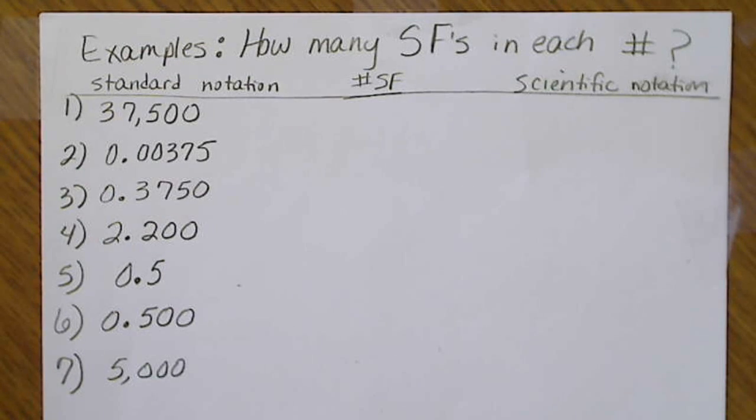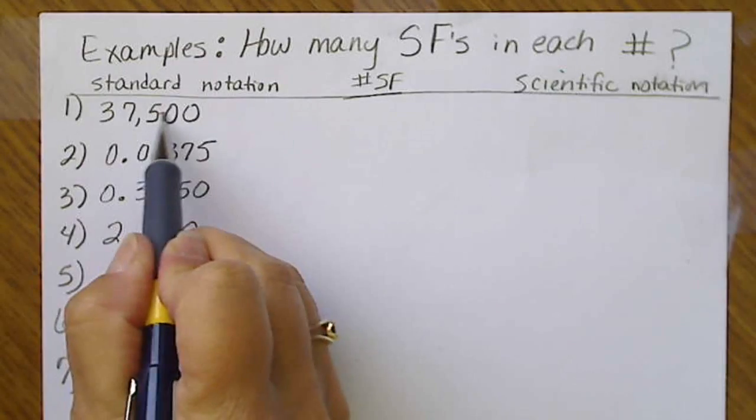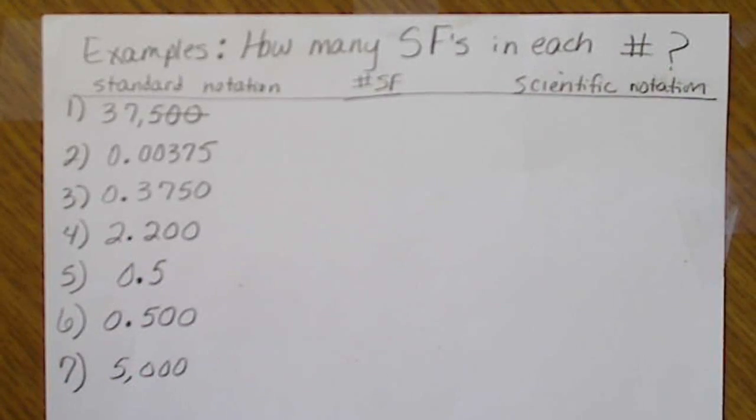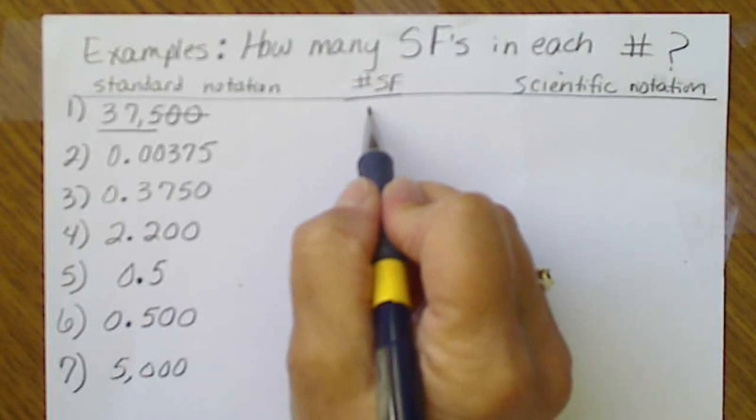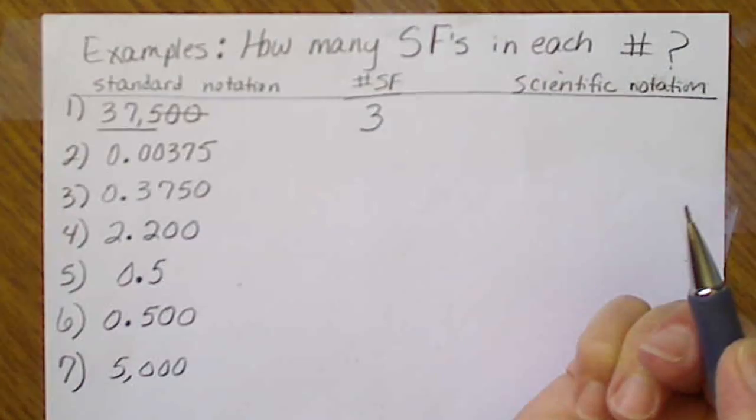So the number is 37,500. These zeros are at the end of a number, so they are not significant because there's no decimal in the number. And so these three values are significant. So that number's got three significant figures.